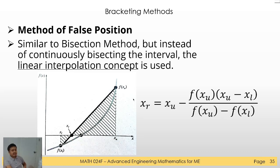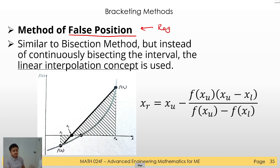Let's now move on to the second method, which is the method of false position, also called the Regula Falsi. The Regula Falsi is derived from the linear approximation or linear interpolation in between the two points of our interval.